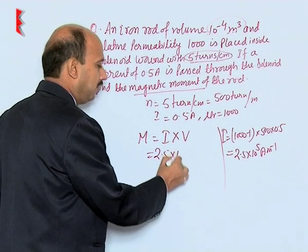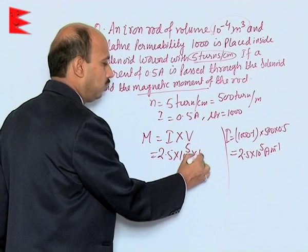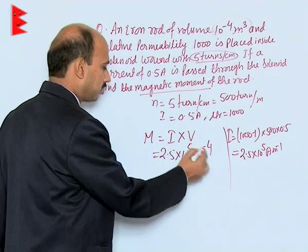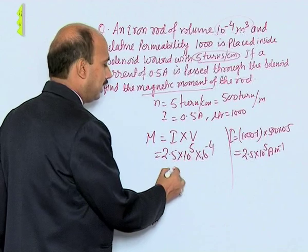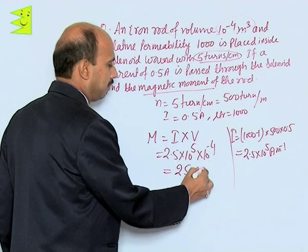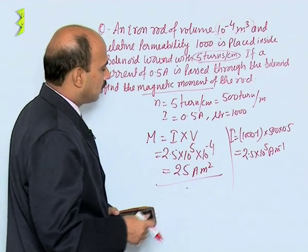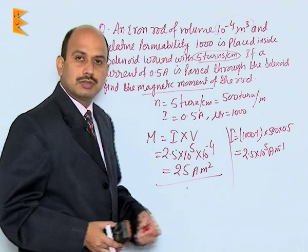So it is 2.5 into 10 raised to power 5 into 10 raised to power minus 4, and we will be getting here 25 ampere meter square. So this is about the magnetic dipole moment.